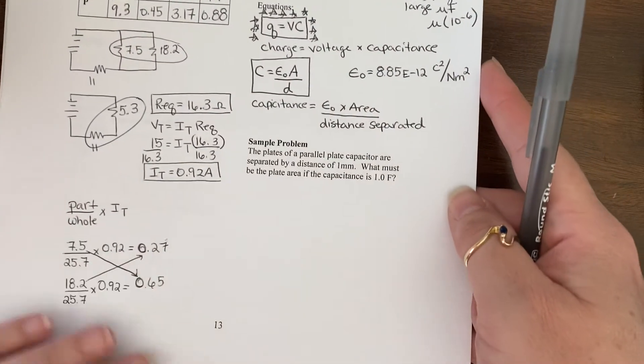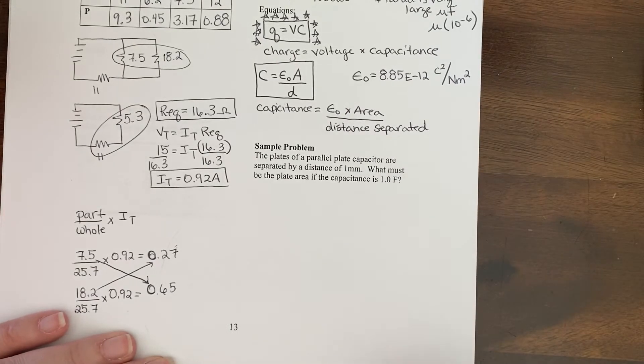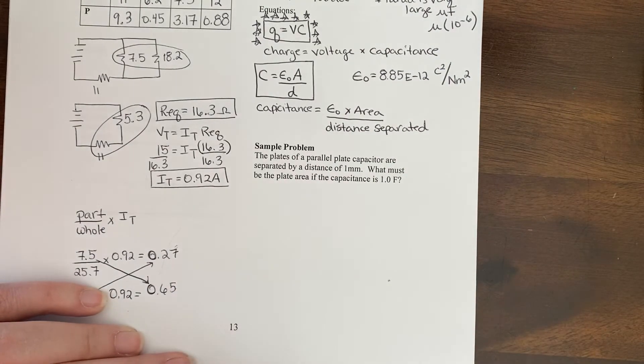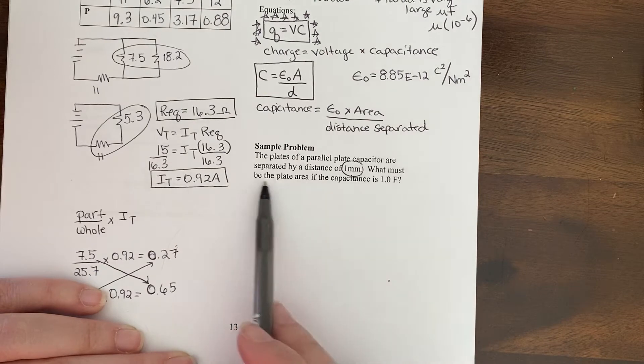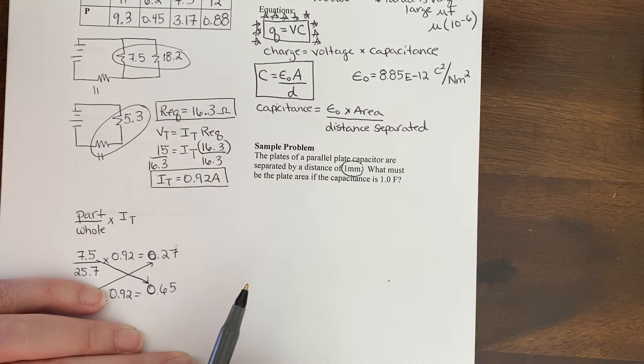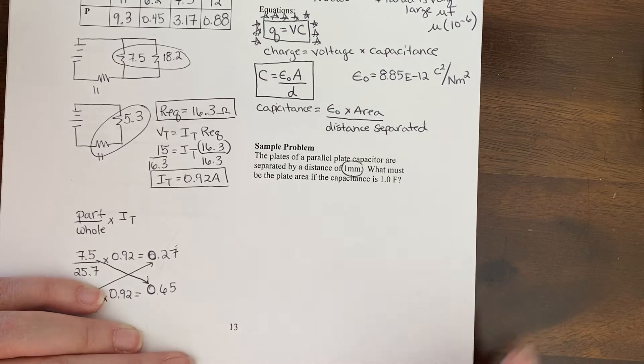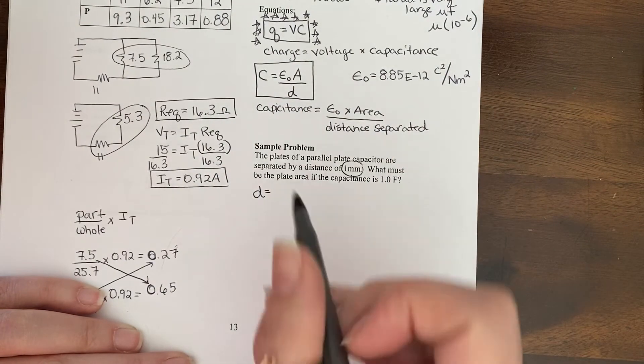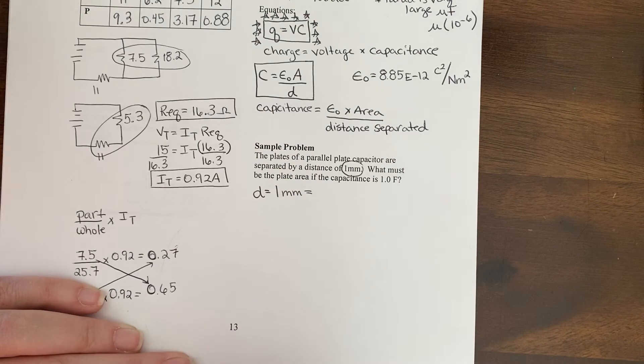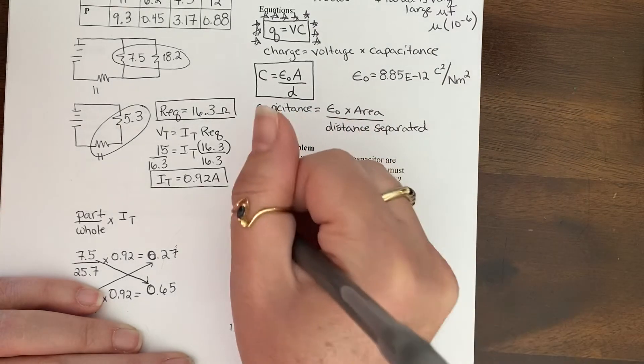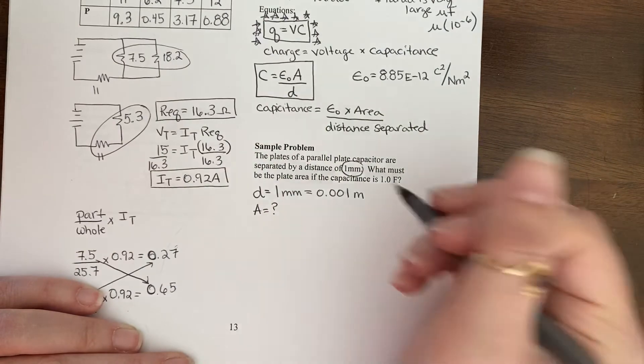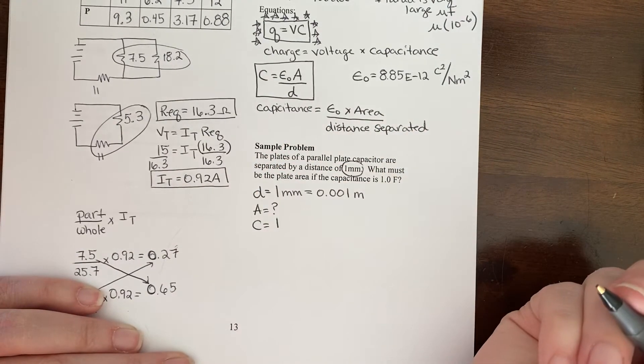I'm sure you're thinking to yourself, gee, are there any practice problems that we could do on this? Why, yes, there are. Here we go. So this one says, the plates of a parallel plate capacitor are separated by a distance of one millimeter. First of all, you should be saying to yourself, we don't use millimeters. We'll have to convert that. What must the plate area be if the capacitance is one farad, which is pretty big. So what information do we have in the problem so far? Well, to me, first of all, we have the distance that they're separated, which they gave us to be one millimeter. But again, we're not going to use it in terms of millimeters. We know there are a thousand millimeters in one meter, or if we divide this by a thousand, we get 0.001 meters. We're looking for the area, and it gives us the capacitance of one farad.